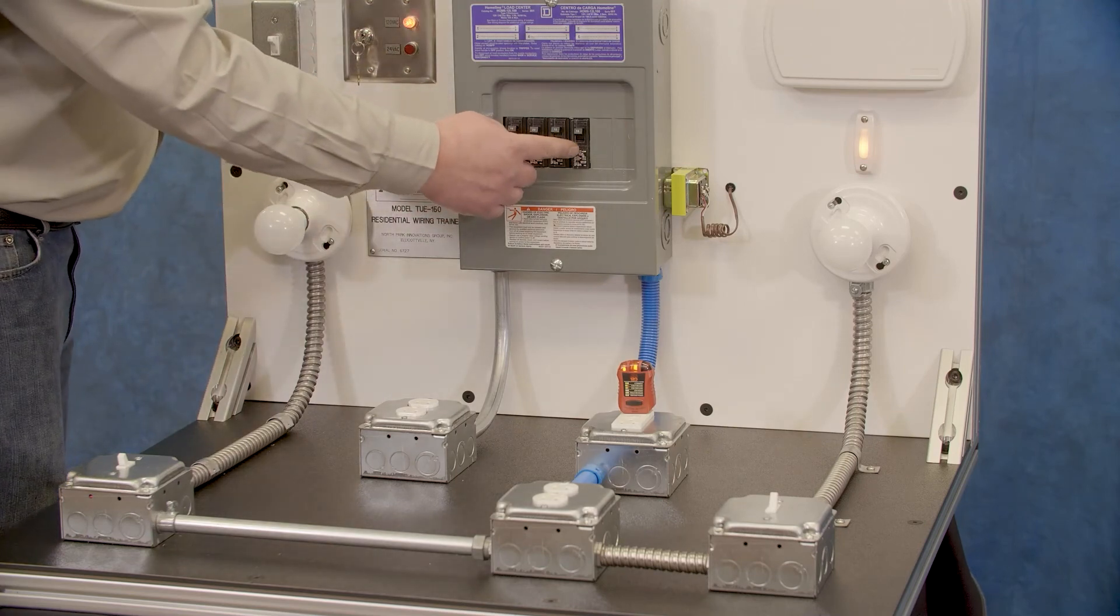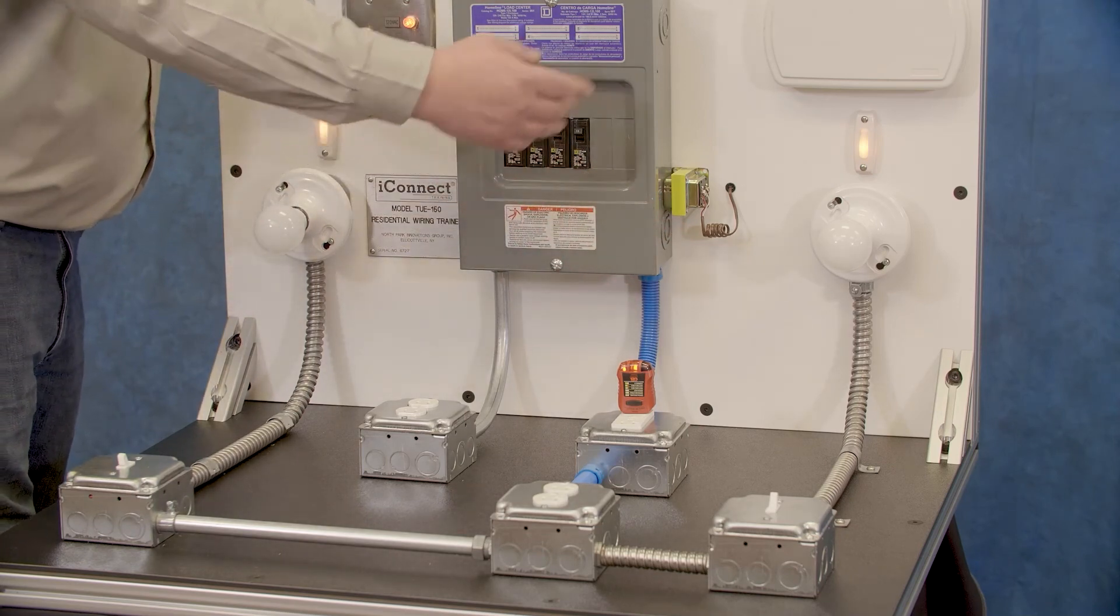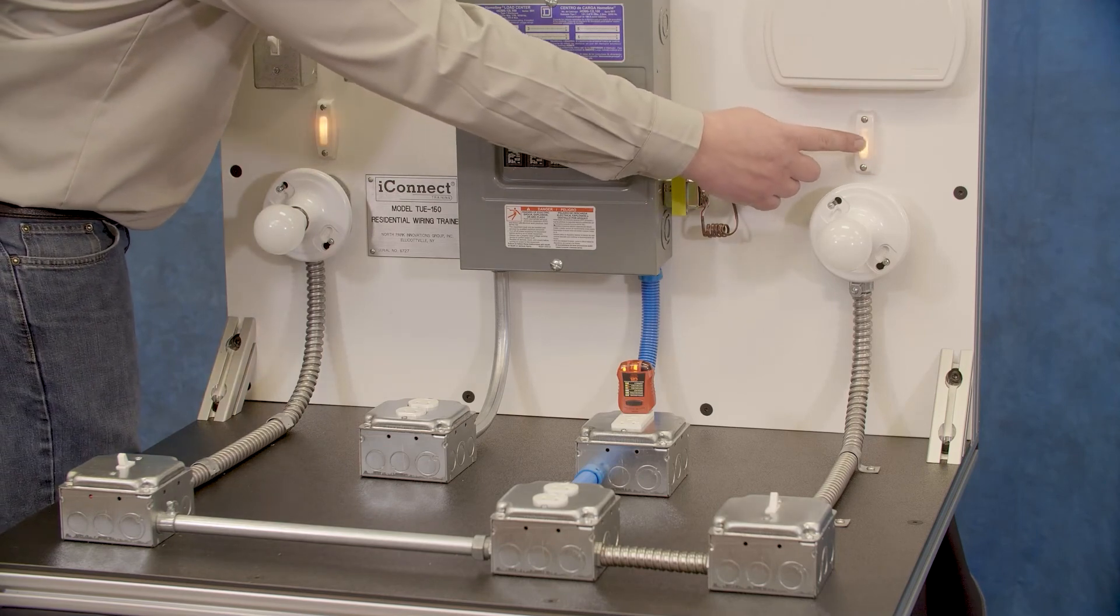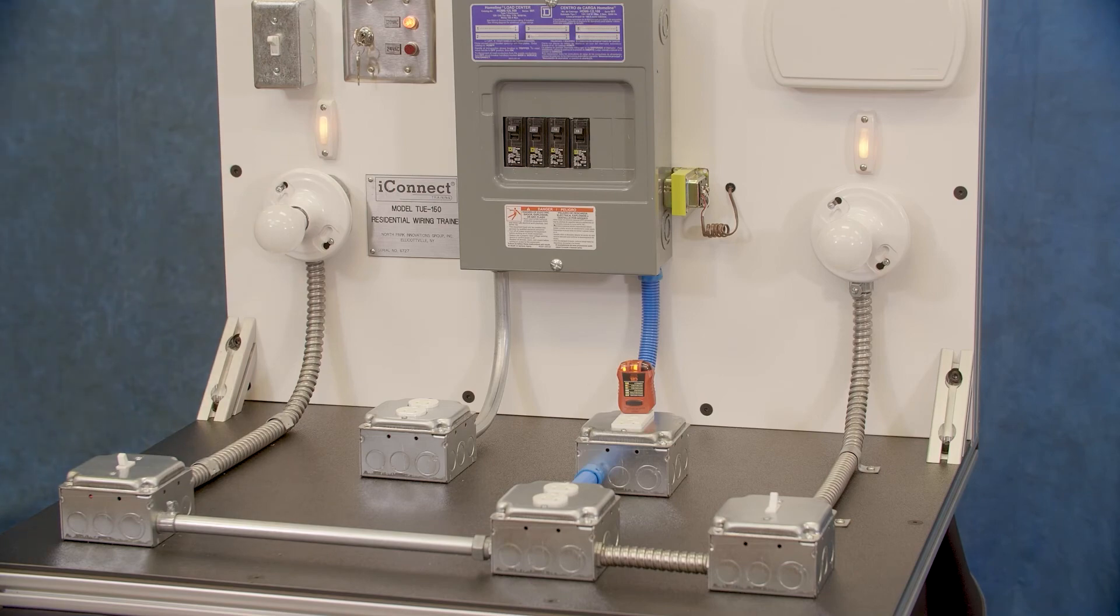Then we have another 15 amp breaker running to our transformer here. So this is our low voltage doorbell. So I've got my front doorbell and the rear doorbell. Outstanding.